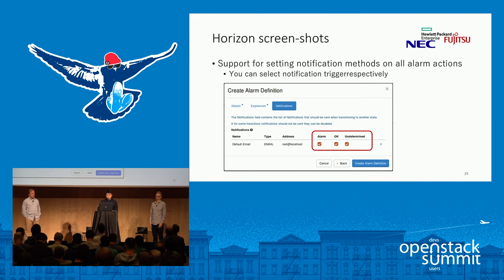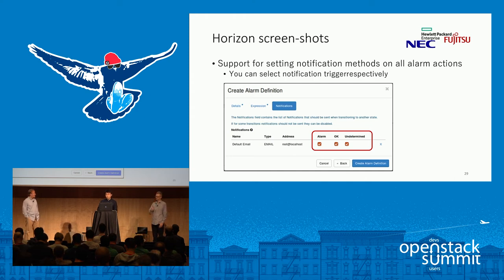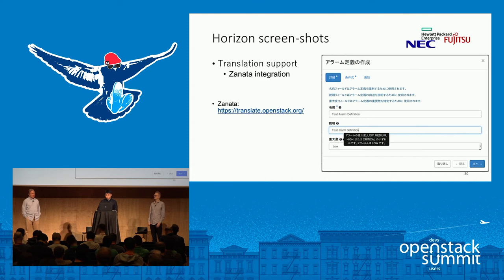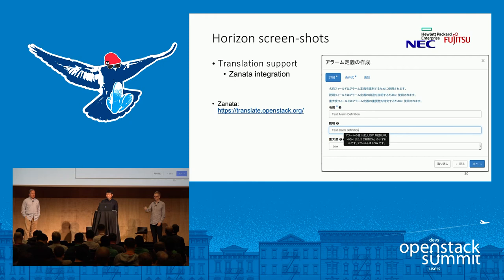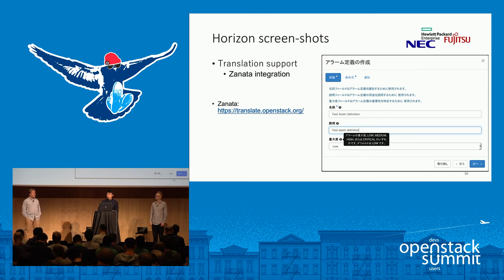Another improvement is support for setting notification methods on all alarm actions. Notifications are always sent when the alarm state changes, for example OK to alarm or alarm to OK. But you may not need a notification when the transition is alarm to OK, so you can now select the trigger for notification via checkbox. Additionally, the Horizon Monasca UI plugin now supports translation, integrated with Zanata, the same as other Horizon plugins. No programming knowledge or development environment is required — you just need to sign up with Zanata.